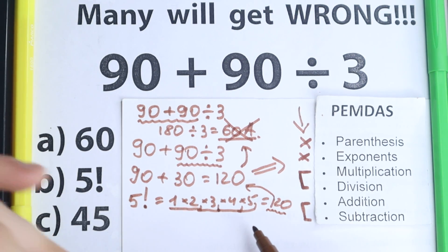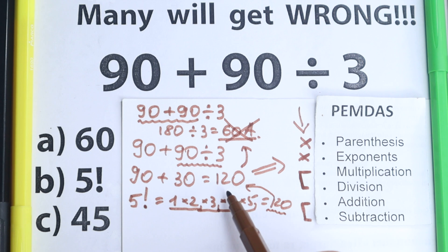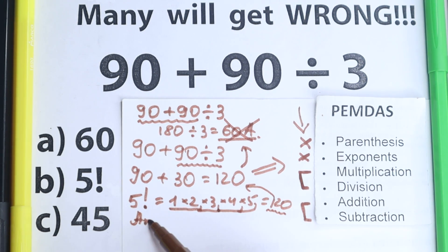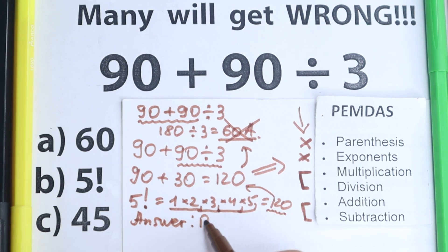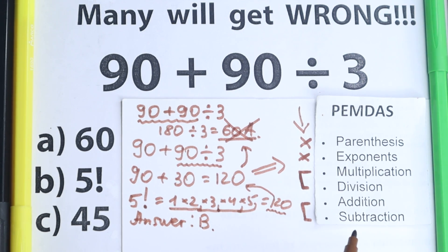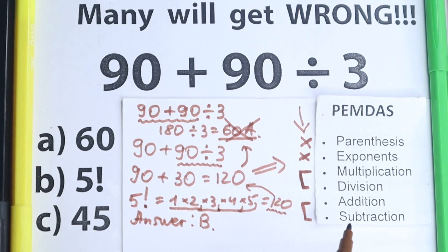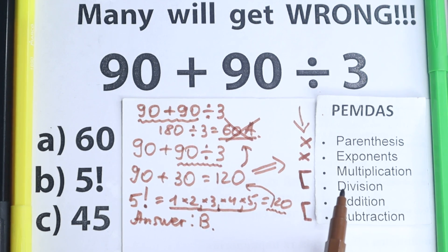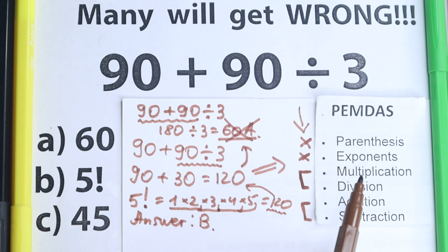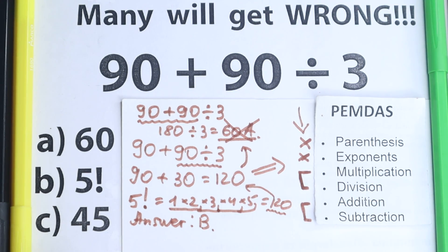So according to PMDMC, the correct answer is of course 120. And according to this test, the correct answer is option B — 5 factorial. This is a very tricky test, and we hope you understand this explanation. Definitely don't feel bad if you got it wrong — now you've learned about PMDMC. Thank you for your time, have a great day, and see you in the next video!